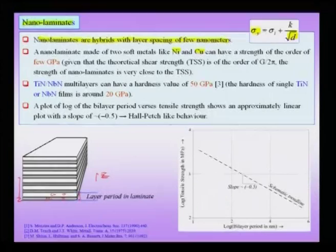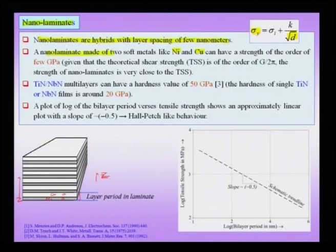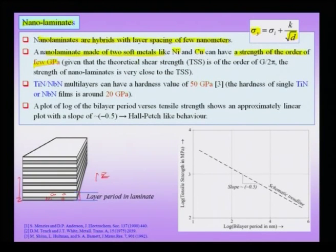Such a structure can be called a superlattice — it is a superlattice in the z direction — and you form such composites because you get additional benefits not found in either individual component. In the case of nickel and copper, if you make a nano laminate with a periodicity of the order of 10 to 30 nanometers, the nano laminate formed from two soft FCC metals like nickel and copper can have a strength of the order of a few GPa, approaching the theoretical shear strength of order G over 2π.